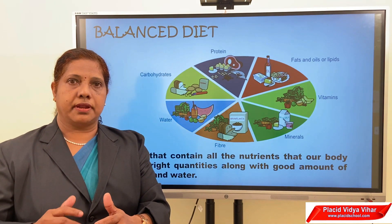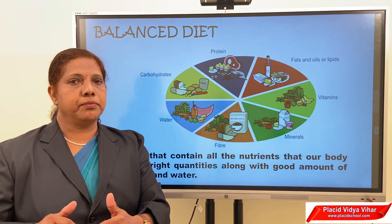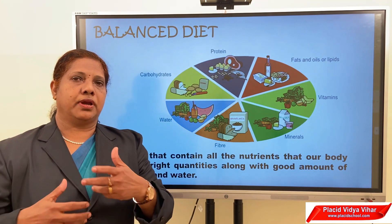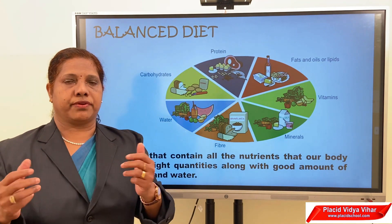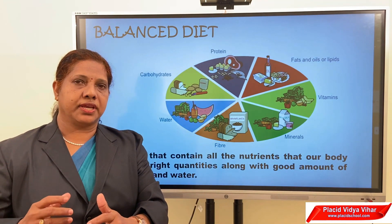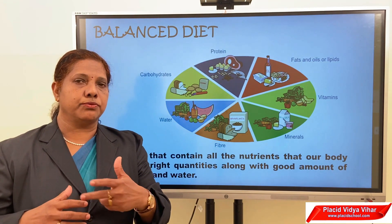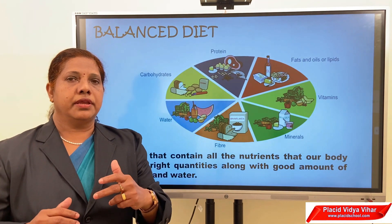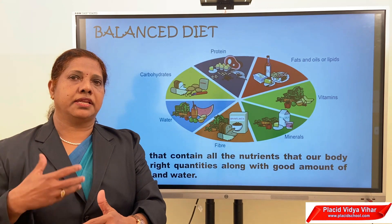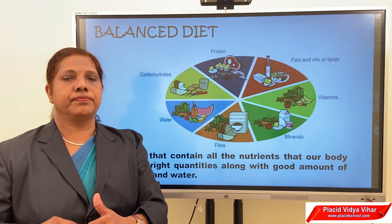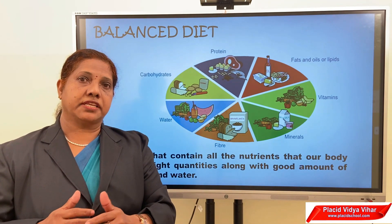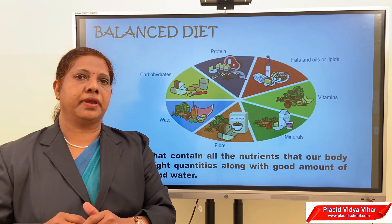The type of diet depends on the age of the person and the work they do. You can check whether your diet is balanced by preparing a diet chart. Write the food you eat over a period of a week on chart paper, and check whether all the nutrients mentioned are included in your diet.